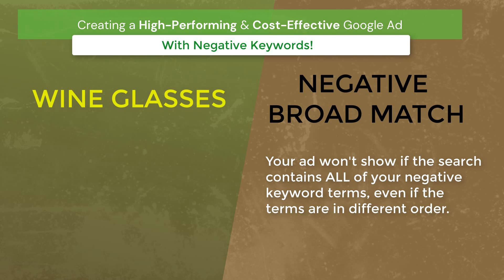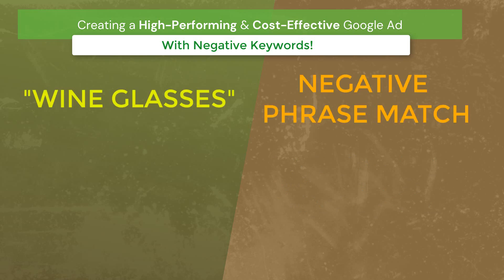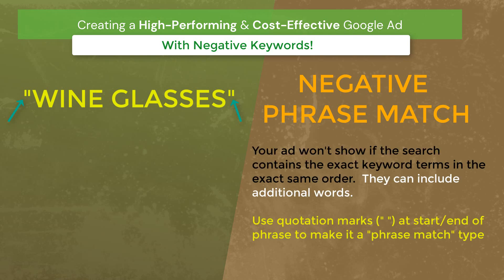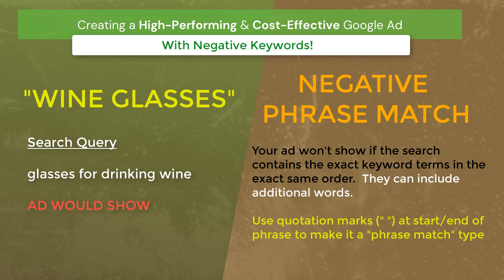You will use broad match a lot — both words have to match in any order. With phrase match, if you entered wine glasses as a phrase match negative keyword, then it would have to be in the person's search query exactly — wine and glasses in that order — to prevent your ad from running. So if they entered best wine glasses, your ad would not run. But if they entered glasses for drinking wine, because those words are not in order, the phrase match wouldn't work to prevent your ad from being displayed.